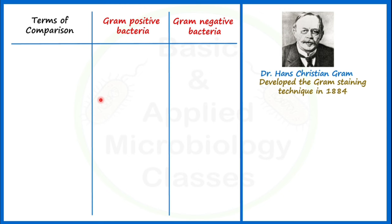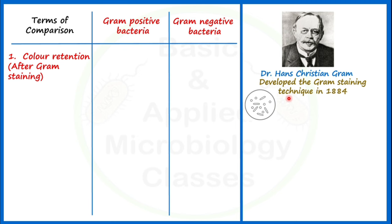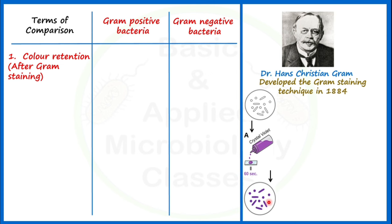Now let's see the first point of difference: color retention. What kind of color is retained by gram positive bacteria and gram negative bacteria after performing gram staining? Let's understand with the help of a schematic diagram. Suppose we take an unknown bacterial culture and perform gram staining. Firstly, we add crystal violet. After addition of crystal violet, all bacterial cells present in this culture will take the purple color of the dye, which is also called the primary stain.